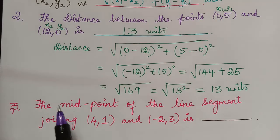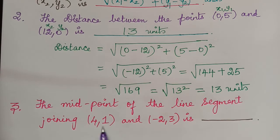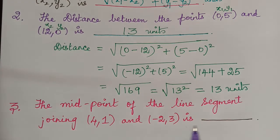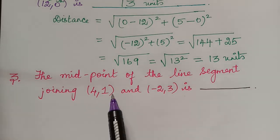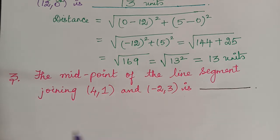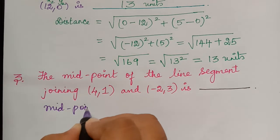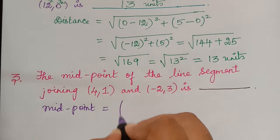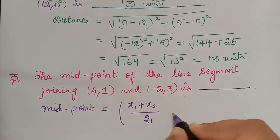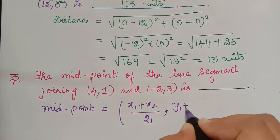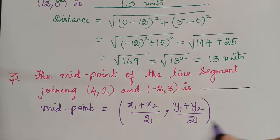The next question is: the midpoint of the line segment joining (4, 1) and (-2, 3) is dash. We have to find the midpoint of the line segment joining these two points. The midpoint formula is given by: x1 plus x2 divided by 2, comma y1 plus y2 divided by 2.